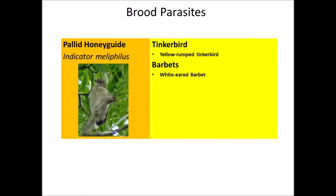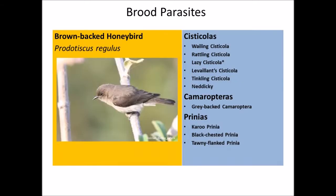The Pallid Honeyguide, Indicator meliphilus, has all members of the barbet family as hosts — basically the white-eared barbet and the yellow-rumped tinkerbird.